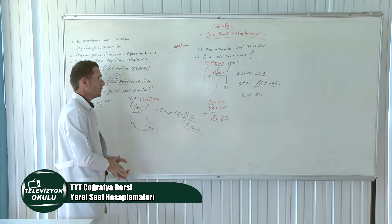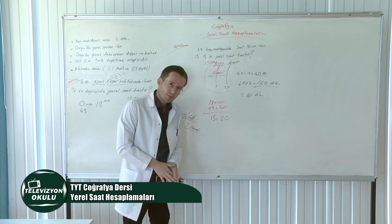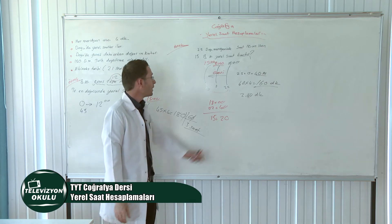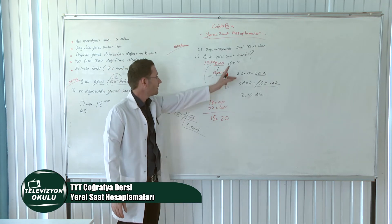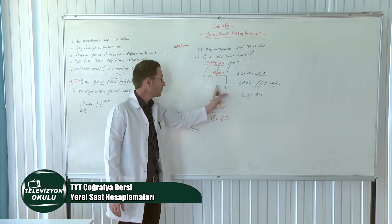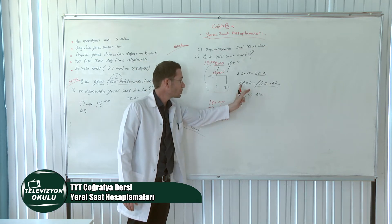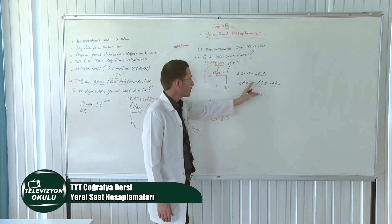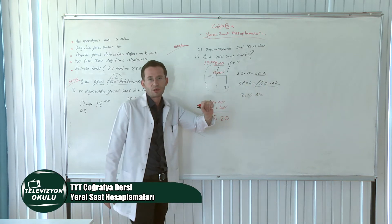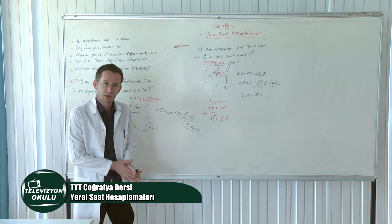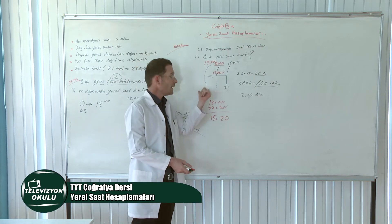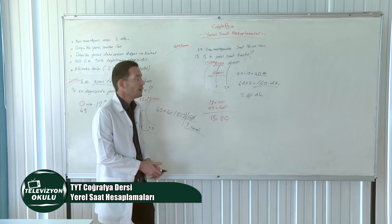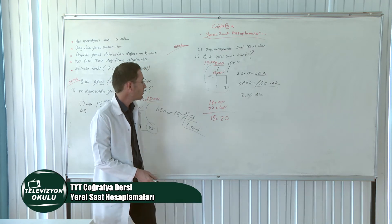Özetle: 25. Doğu meridyeninde saat 18.00, 15. Batı meridyeninin yerel saatini istiyoruz. Biri doğuda biri batıda olduğu için farkı bulmak için topluyoruz: 40 boylam. 40 çarpı 4 eşittir 160 dakika, saate çevirince 2 saat 40 dakika yapar. Batıdaki yer için çıkartıyoruz: 18.00 eksi 2 saat 40 dakika eşittir 15.20.